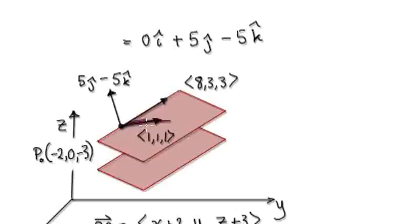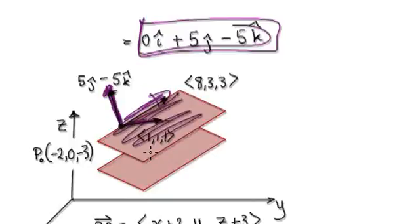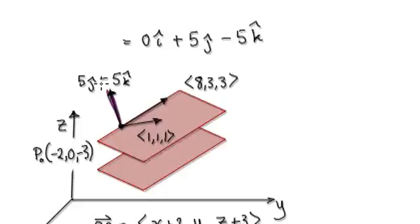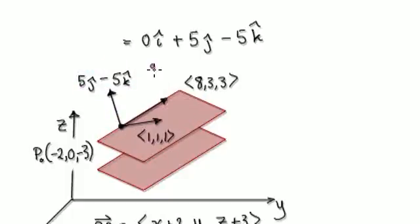So we've got our first vector, we've got our second vector, and computing the cross product gave us this. This represents the normal vector that is perpendicular to this plane. So now we've got our normal vector, and to describe this plane we set up a general point.